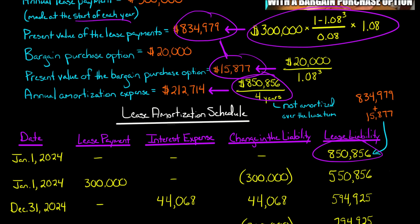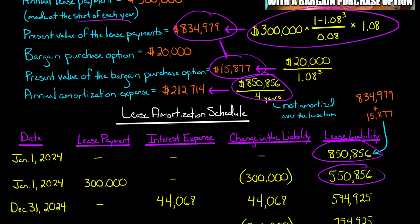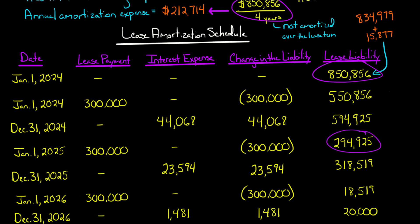So we've got our initial lease liability, and then immediately on day one of the lease, the $300,000 lease payment brings the lease liability to $550,856. Multiply that number by the discount rate — the 8% lessor's implicit rate — and that gives you the interest expense for the first year: $44,068, which is $550,856 times 8%. Remember, lease payments reduce the lease liability, but interest accrued on the lease liability increases it. So we go $550,856 plus the interest that accrued, then the next payment of $300,000 reduces the lease liability. For the second year, we take that $294,925 and multiply it by 8% to get the interest expense, which increases the lease liability, and then there's another payment of $300,000.